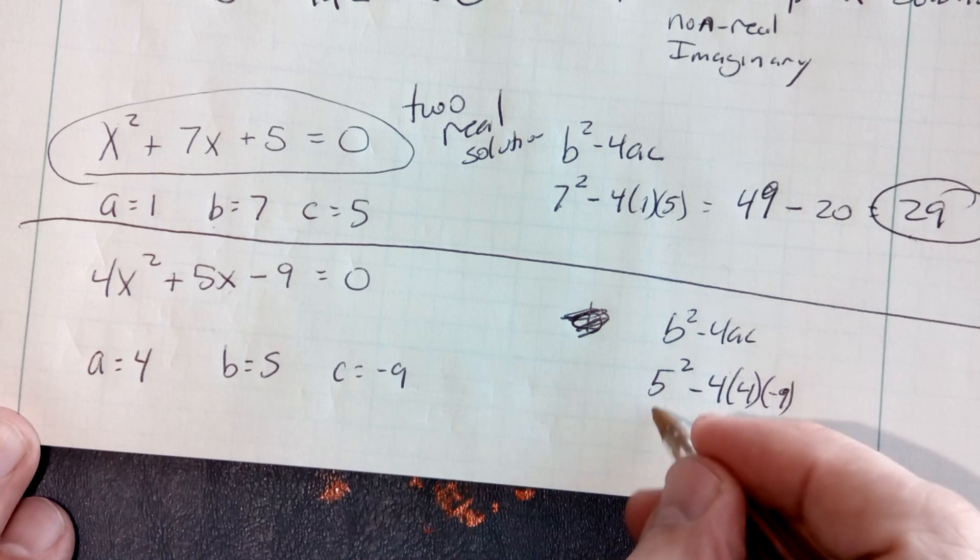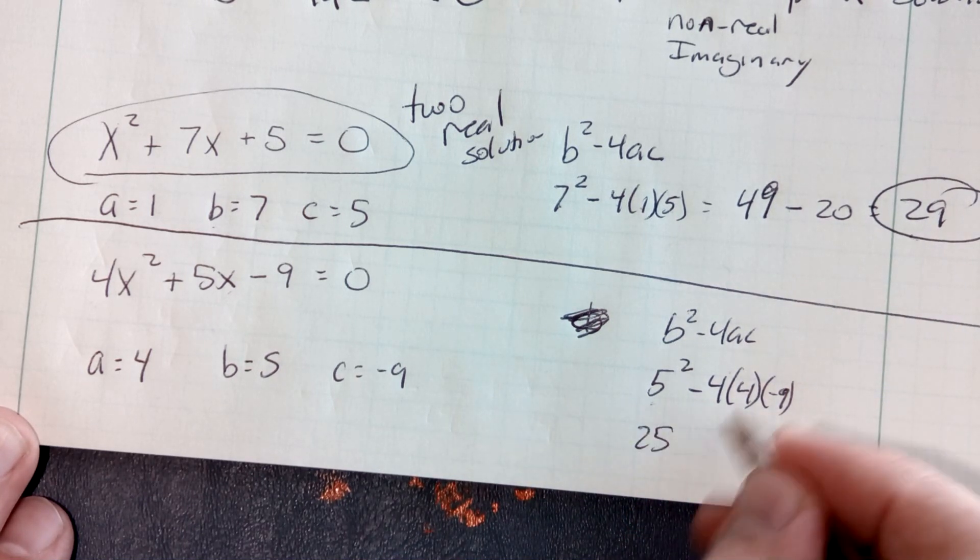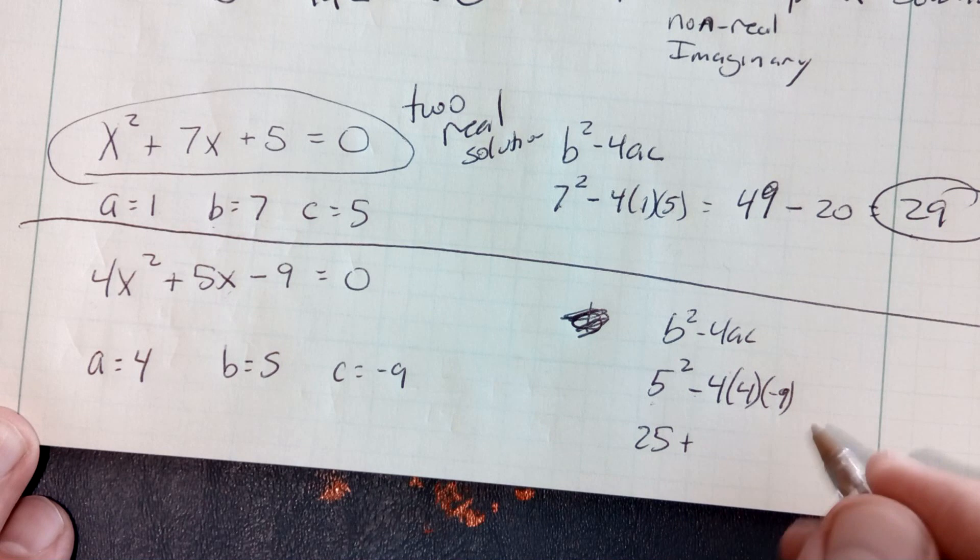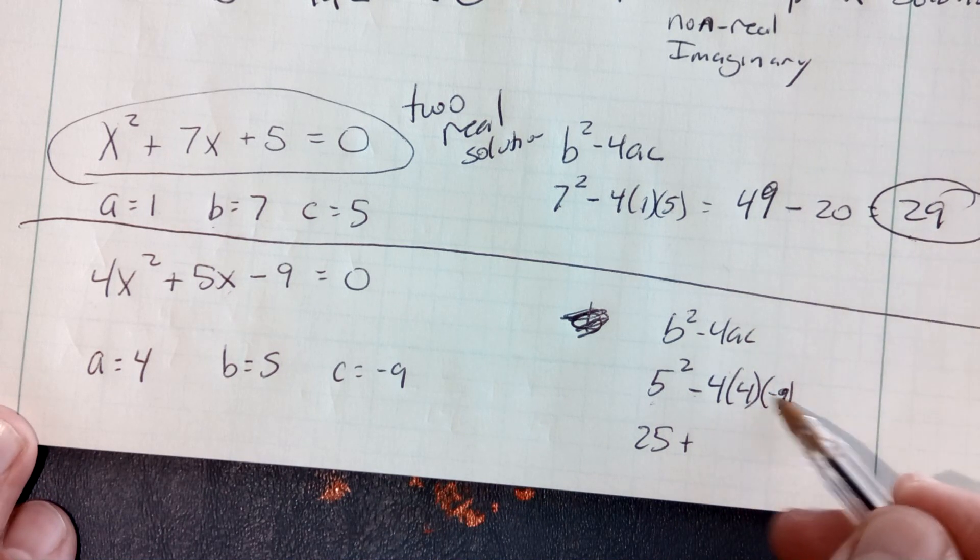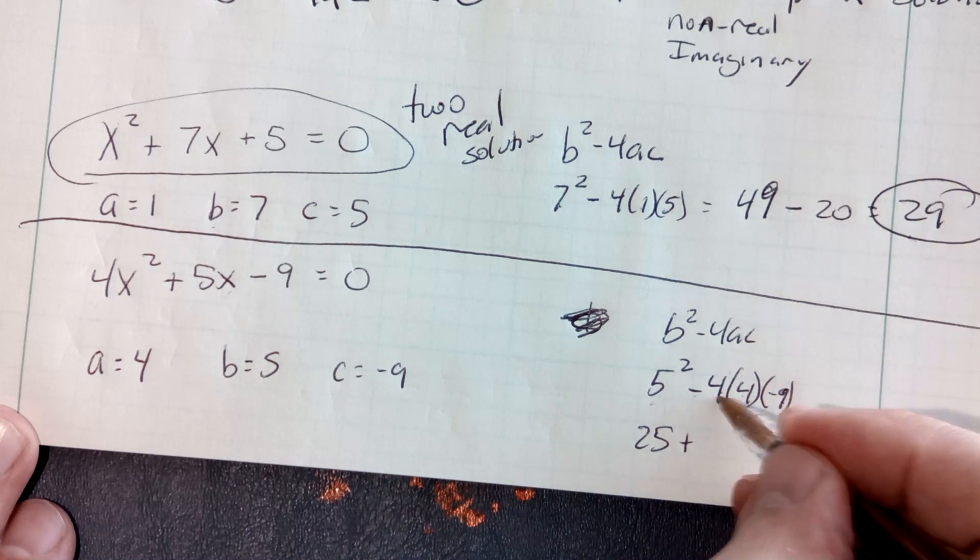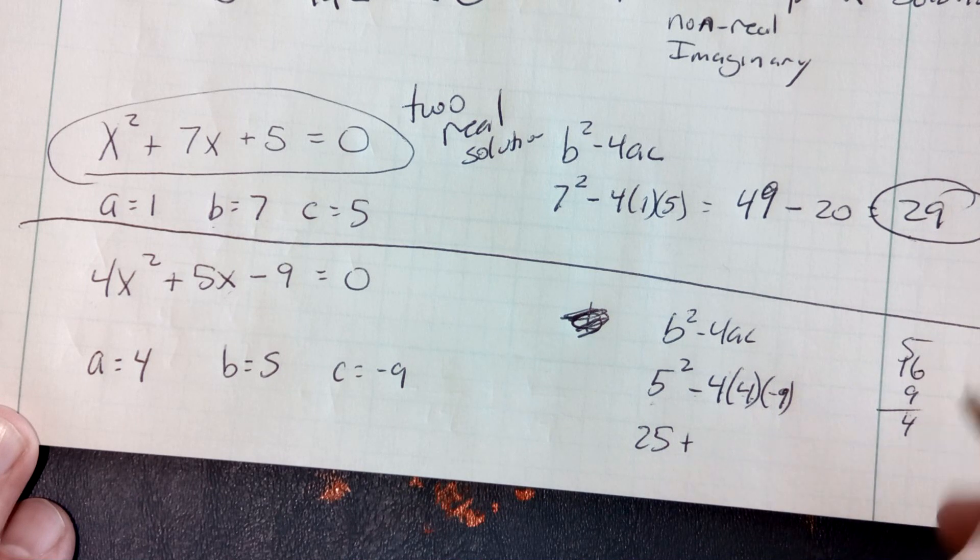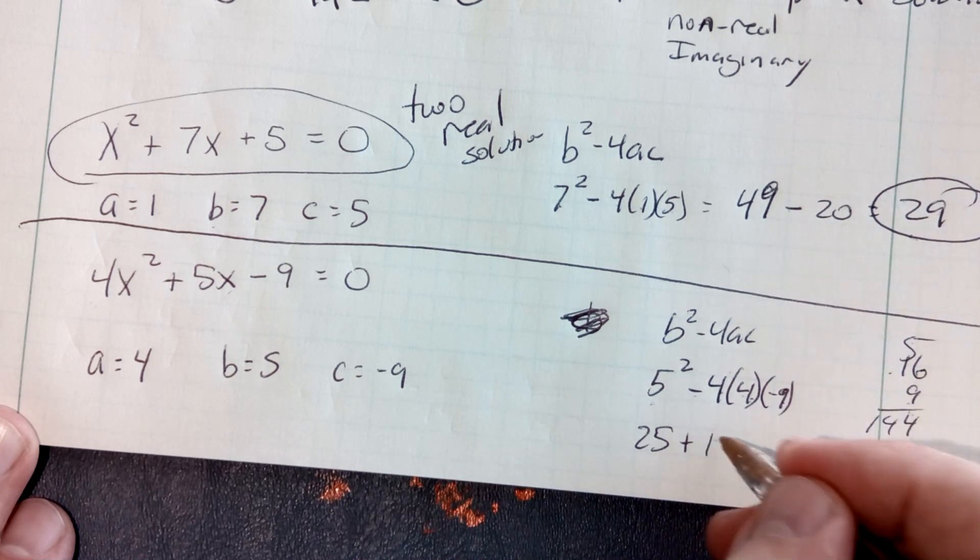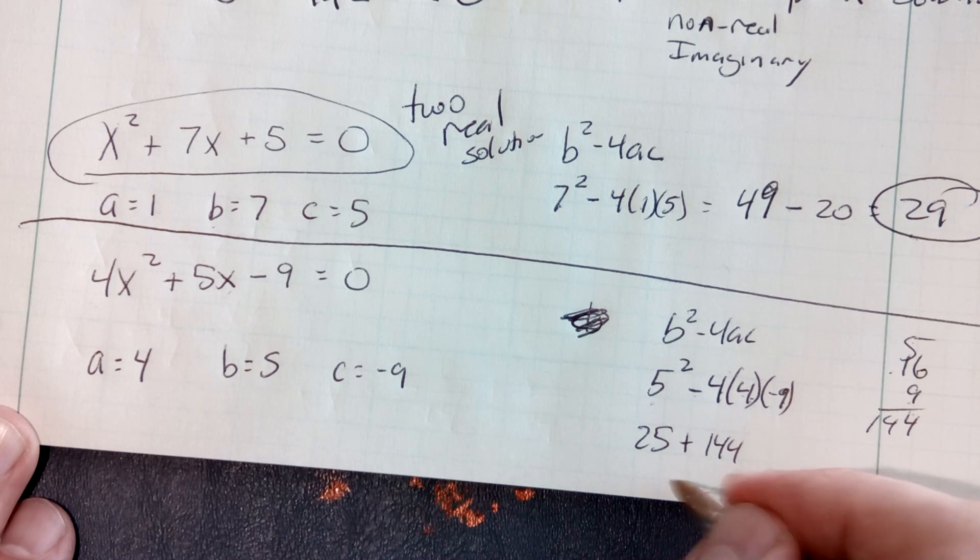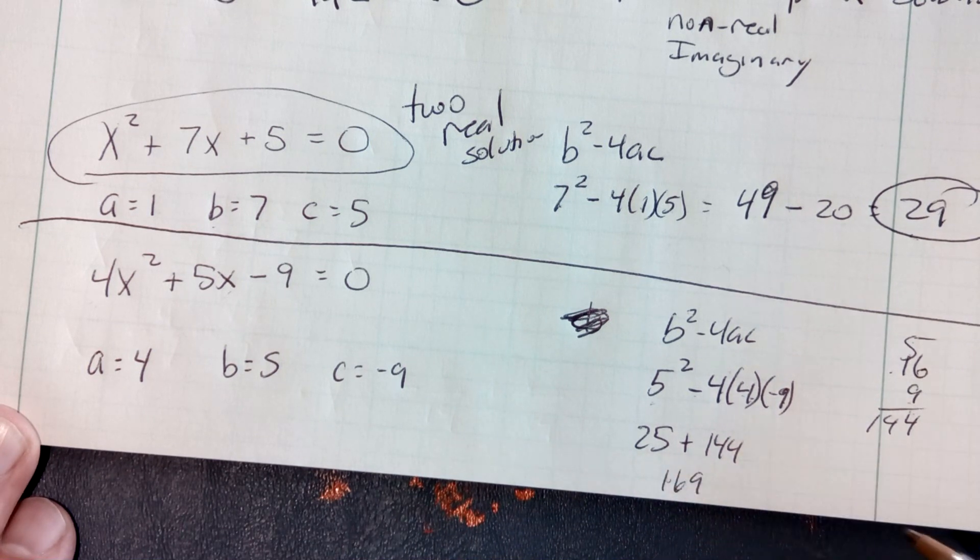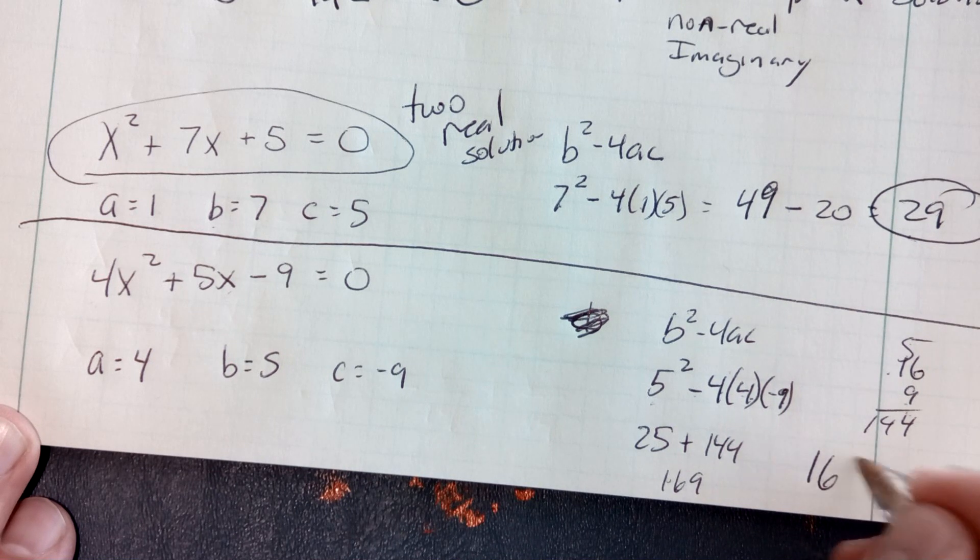So now I'm going to do 5-squared is 25. Minus times a minus is going to be plus. 9 times 16, because 4 times 4 is 16. 16 times 9, 9 times 6 is 54, 9 plus 5 is 144, so it's 25 plus 144, so that's going to be 169. So my discriminant is 169.